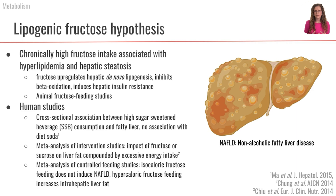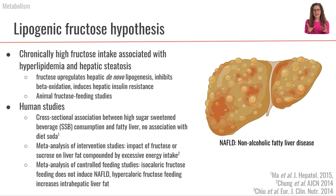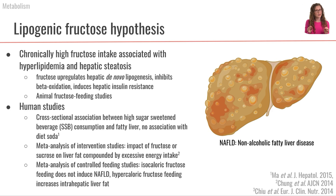Overall, from the larger body of human studies, there doesn't seem to be strong support for the idea that dietary fructose, as humans consume it, leads to a lipogenic outcome in the liver. Another meta-analysis of controlled feeding studies found that isocaloric fructose feeding did not induce NAFLD, whereas hypercaloric fructose feeding did seem to increase intrahepatic liver fat storage. Since humans typically consume fructose in roughly equivalent amounts to glucose — whether from sucrose (50% fructose) or high fructose corn syrup — human studies seem to complicate and not support the lipogenic fructose hypothesis.